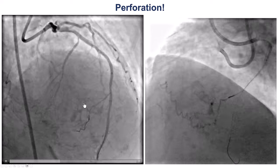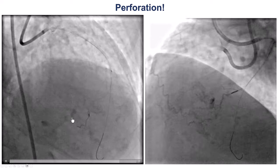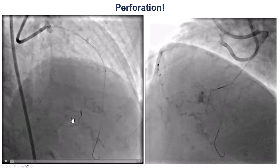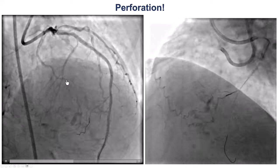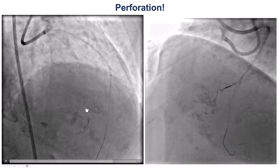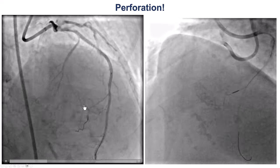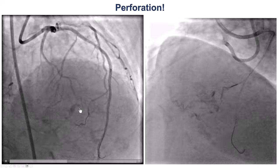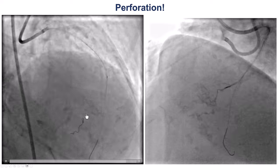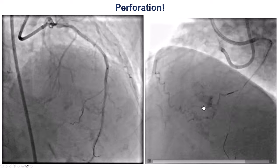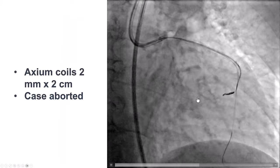We ended up having a perforation. This can happen sometimes if we don't look at the septals in orthogonal projections. This was actually not a septal but an epicardial collateral, and our wire perforated this epicardial collateral.